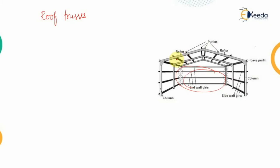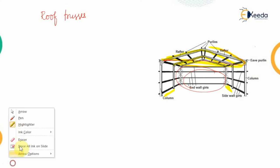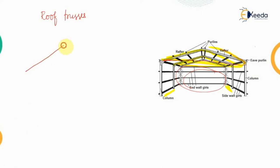Looking at a steel structure, certain parts are provided at a certain distance. The triangular part highlighted here is known as the truss structure, which is the basic structural member. These trusses are provided at certain distances from one another. The truss is a triangular-shaped structure which transfers the load from the roof covering to the columns on which it is supported via pin connections.